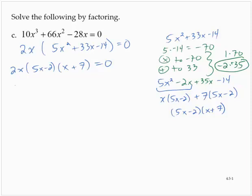Setting the factors to 0, 2x is equal to 0, 5x minus 2 is equal to 0, x plus 7 is equal to 0. If 2x is equal to 0, dividing by 2, x is equal to 0.